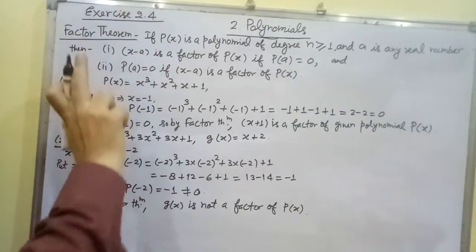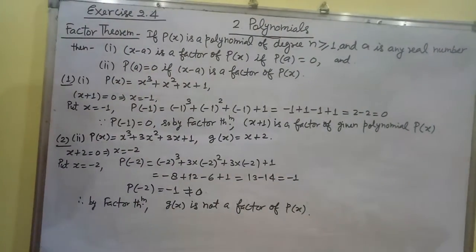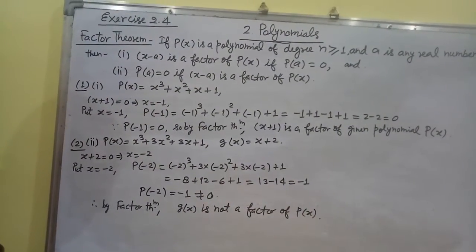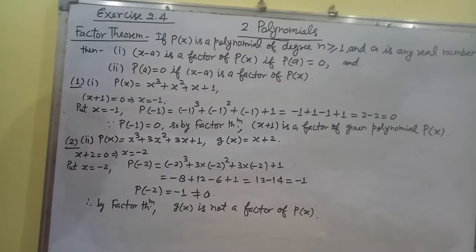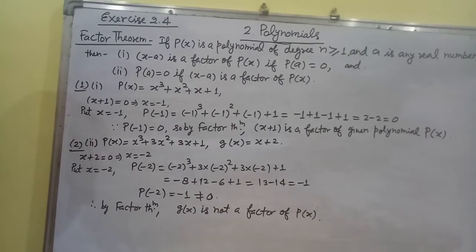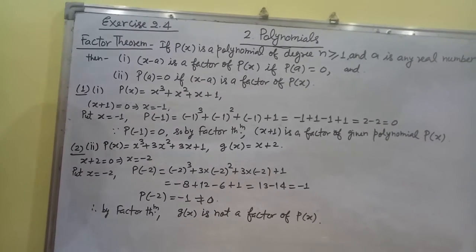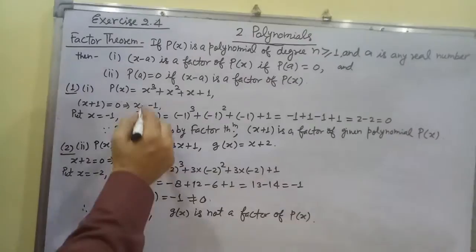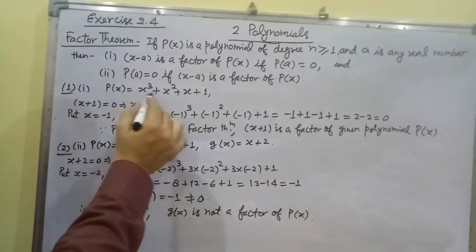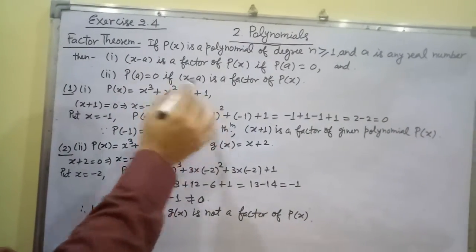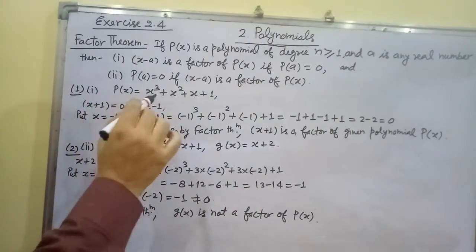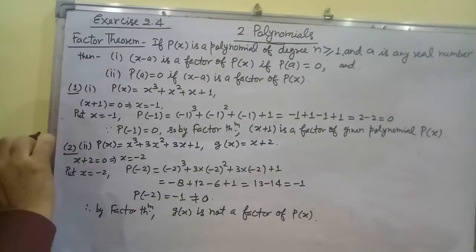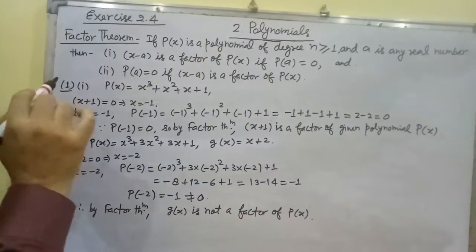This is Exercise 2.4. The first question is: determine which of the following polynomials has x plus 1 as a factor. The polynomial given is P(x) = x³ + x² + x + 1. We need to check whether x plus 1 is a factor or not using the Factor Theorem.